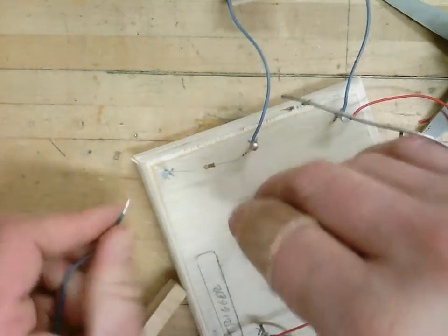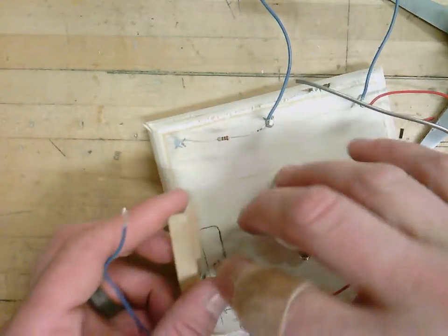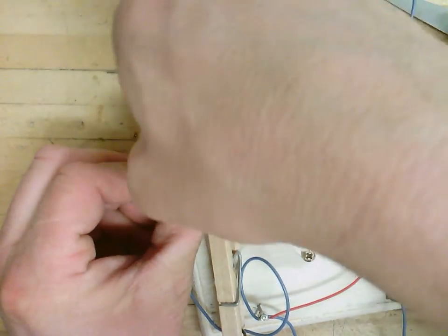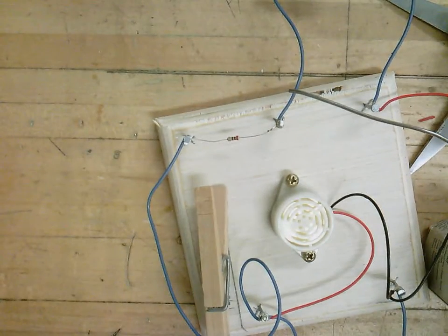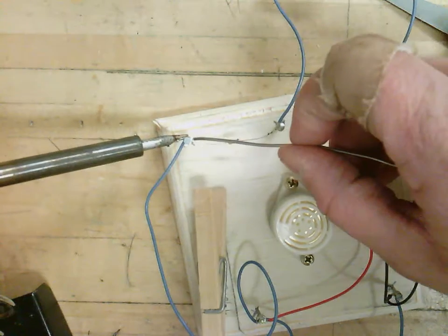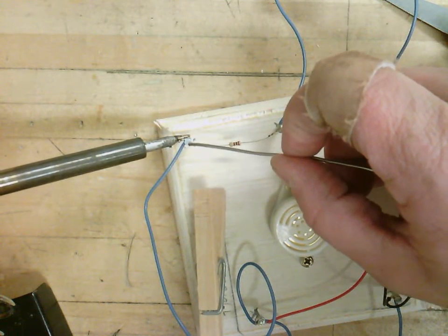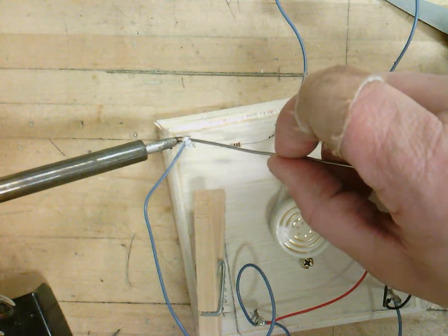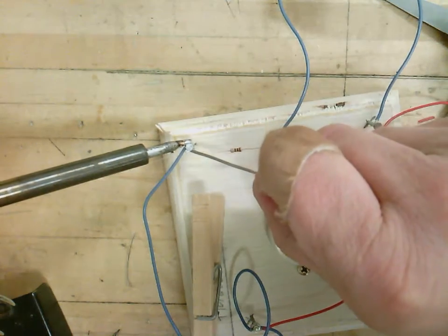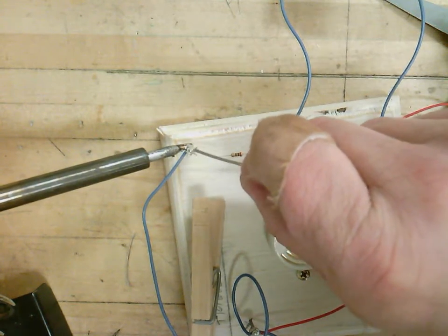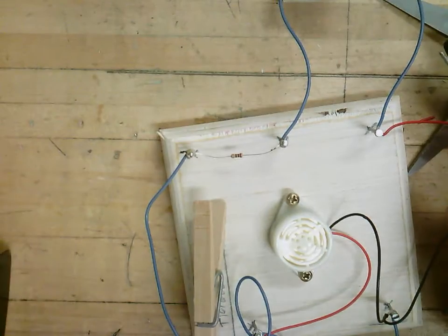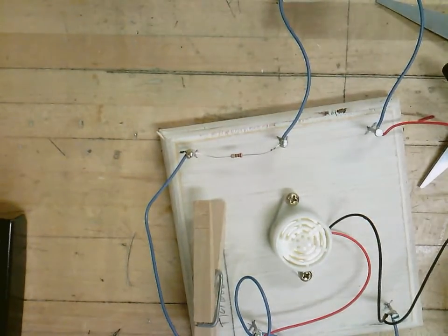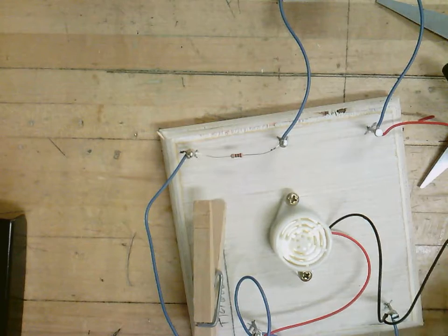Only got one solder joint left. And that one is going to come around from my trigger switch over here. Put this one in. Now I can solder this last connection. Let it get warm. Don't rush it. Now, electrically, this thing is done.